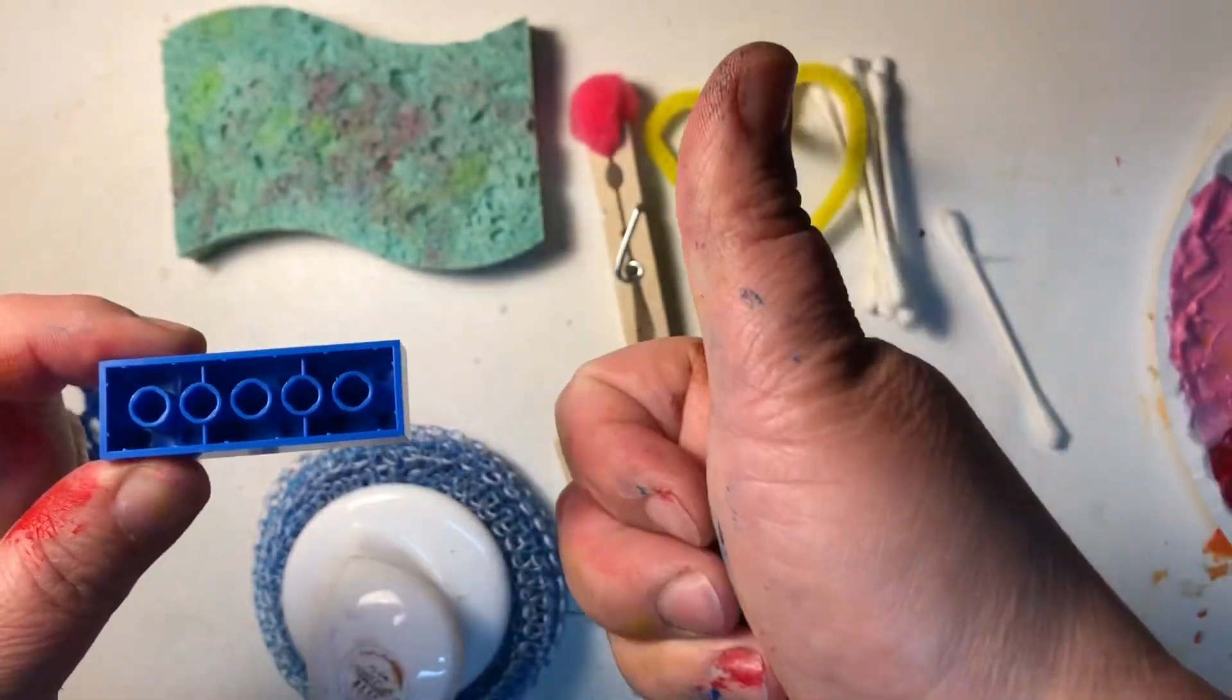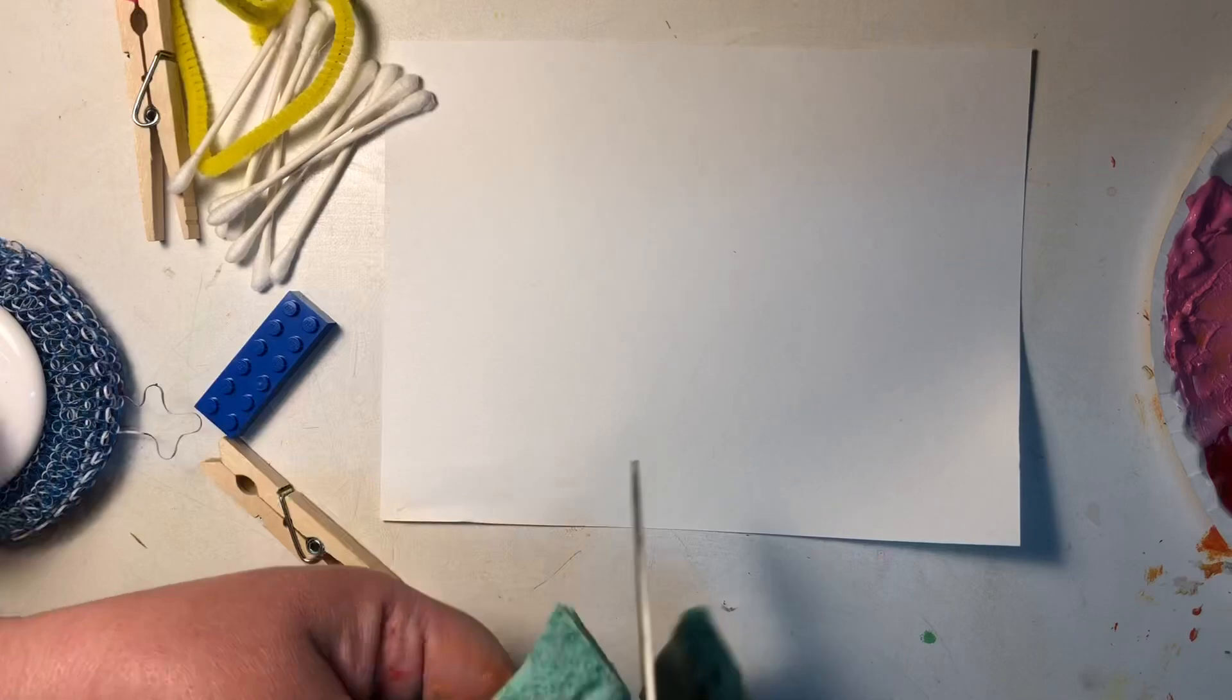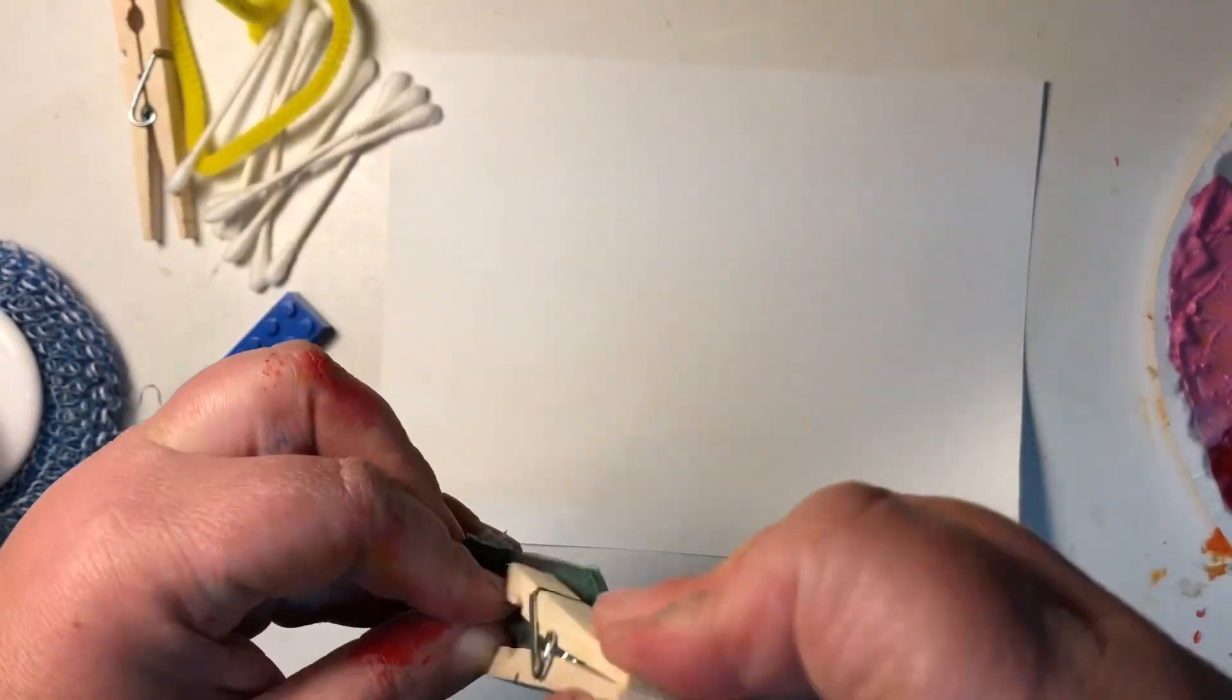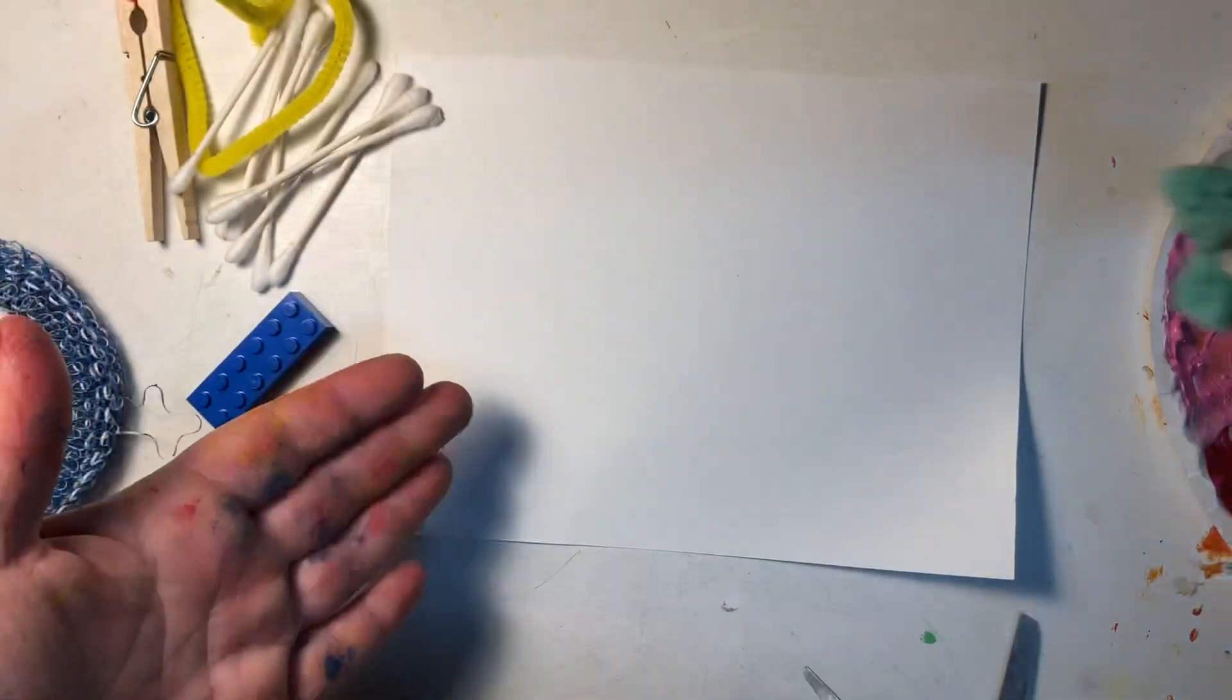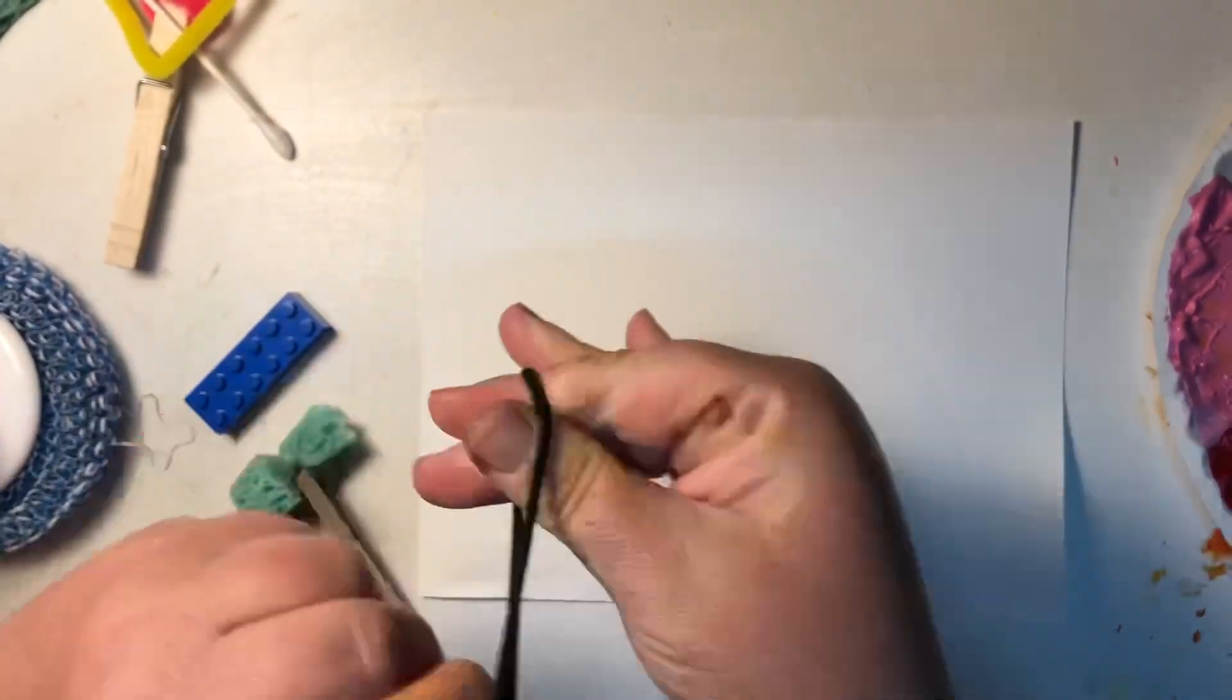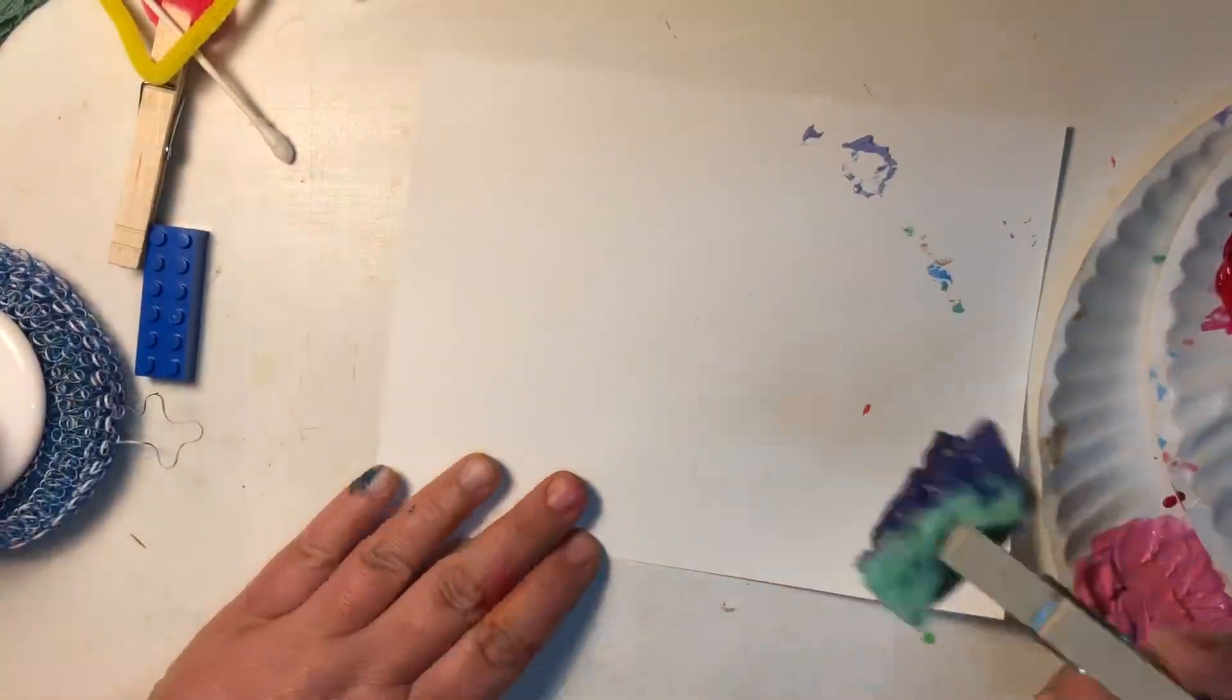Legos are awesome for printing. I started by cutting the sponge into an interesting shape and then I used my clothespin so I wouldn't get my fingers too dirty when I used it to paint. Once you get all of your fun printing and painting supplies ready, let's dive in.